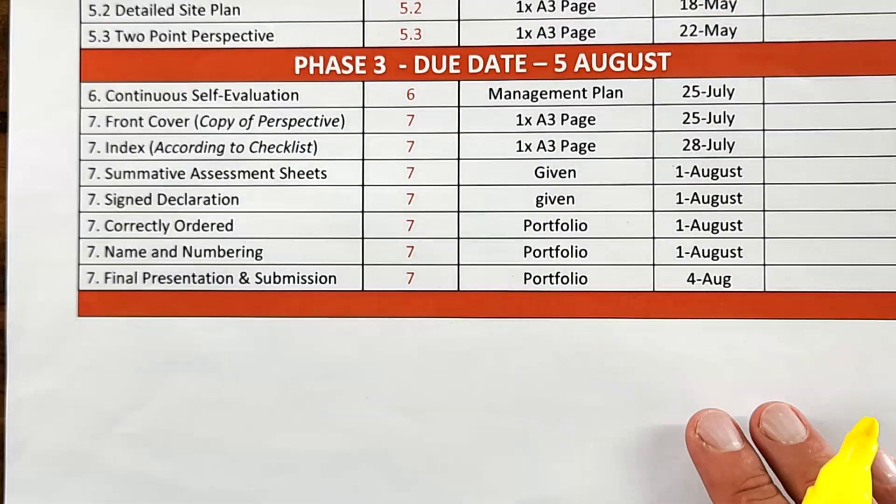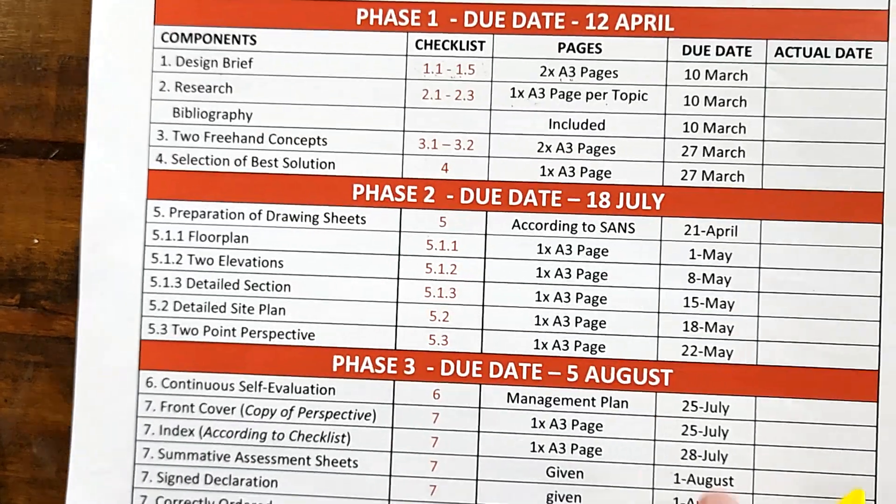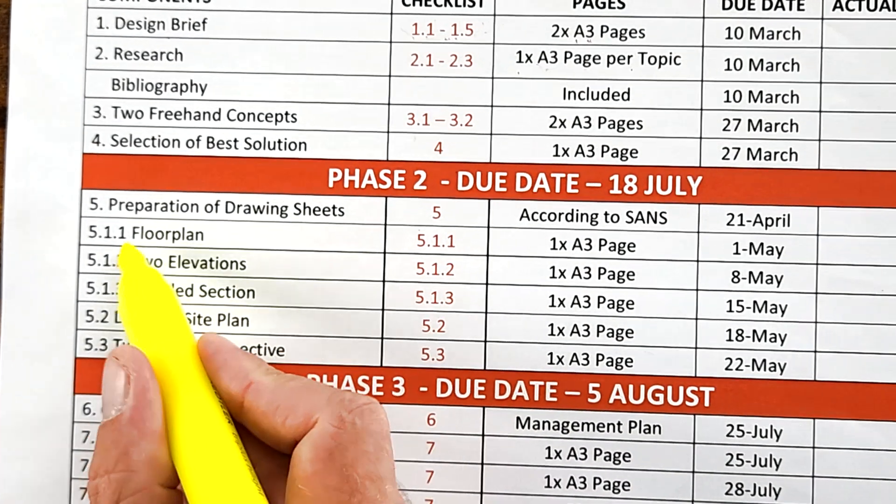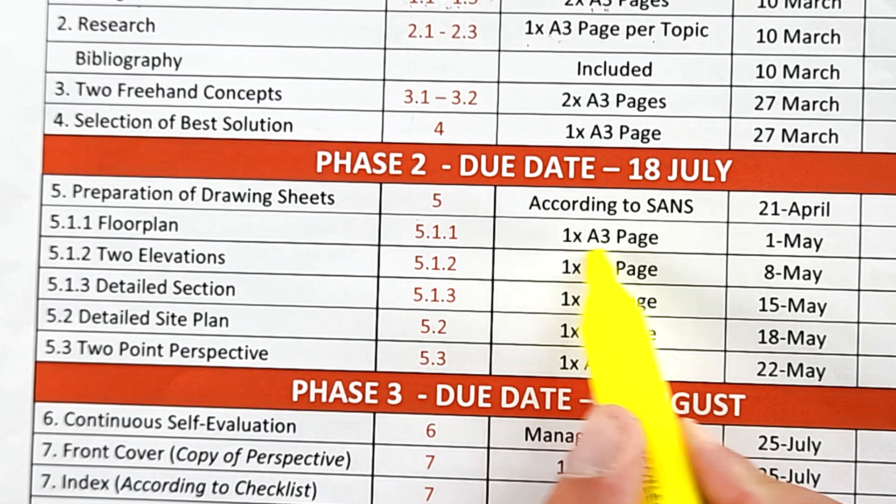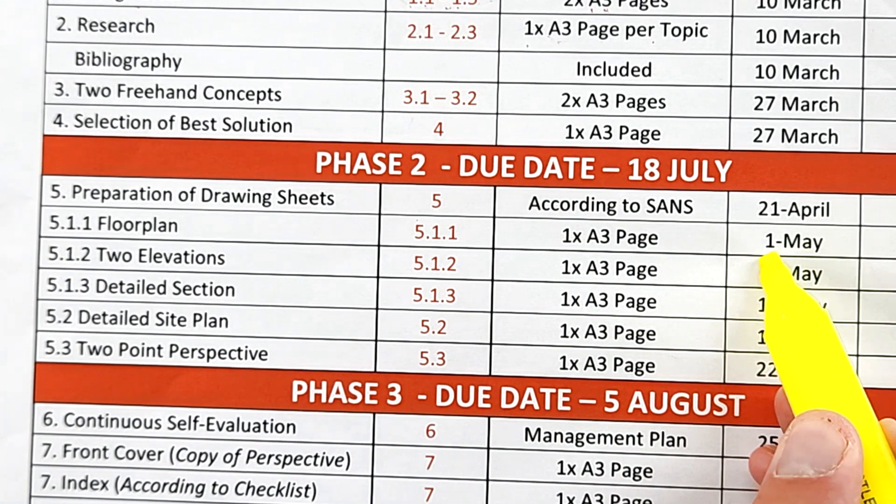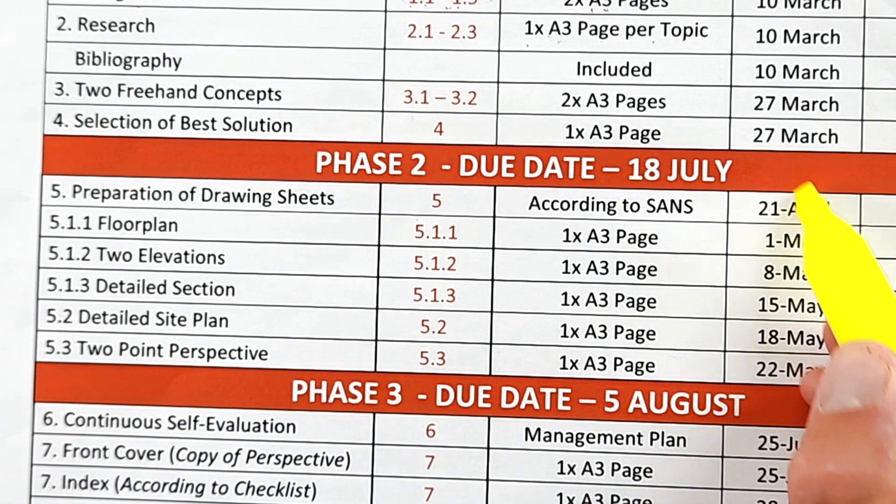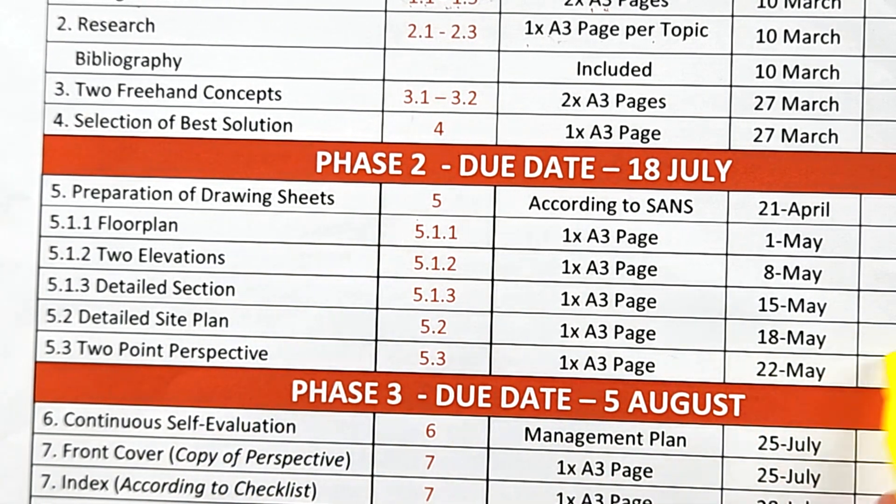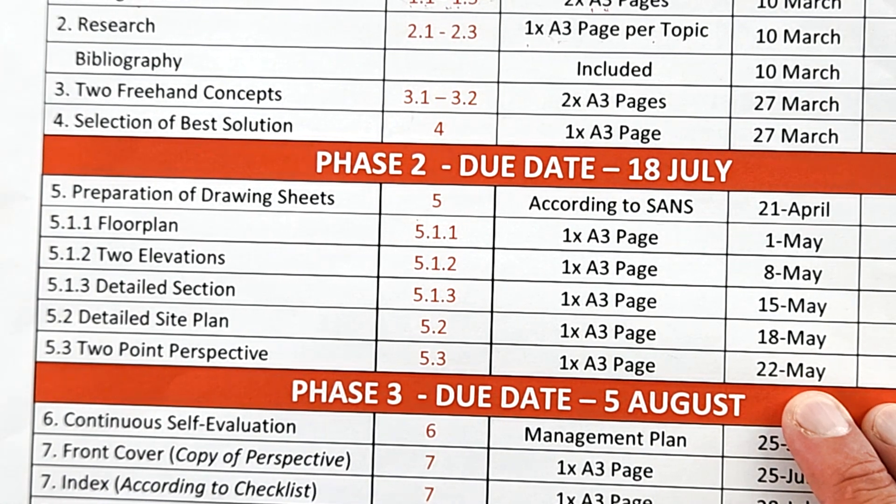I think the best before we get to the actual drawings is to just check where this fits in on our pace setter. If you look at the pace setter that's available as a download in the description, we're at 5.1.1, the floor plan. It's on an A3 page, and this is the estimated date. All of these drawings, including the elevation, section, site plan, and two-point perspective will be due before the end of second term.